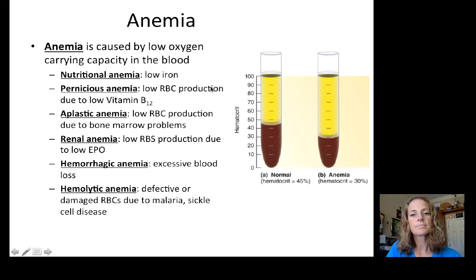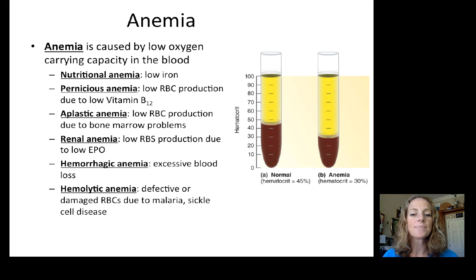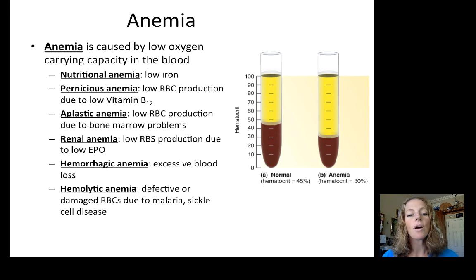Anemia is caused by low oxygen-carrying capacity in the blood and has many possible causes: low iron causes nutritional anemia; low vitamin B12 — required for red blood cell production — causes pernicious anemia; bone marrow problems cause aplastic anemia; low EPO causes renal anemia; excessive blood loss causes hemorrhagic anemia; and defective or damaged red blood cells cause hemolytic anemia, most commonly from malaria or sickle cell disease.